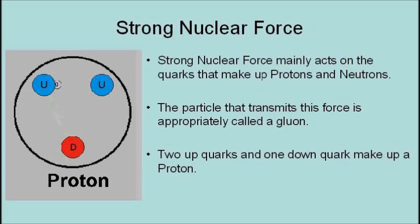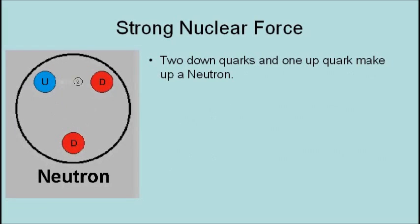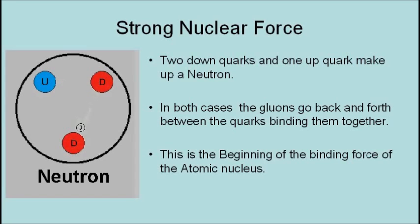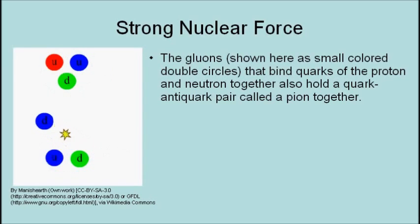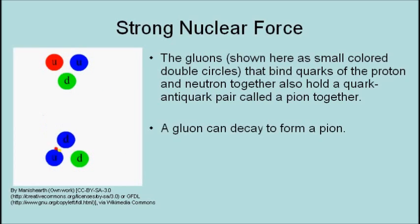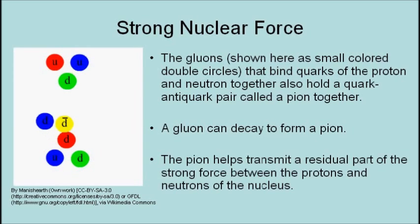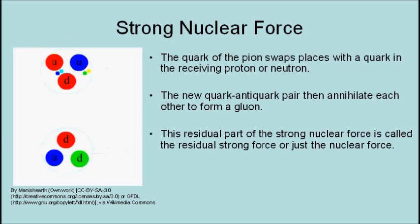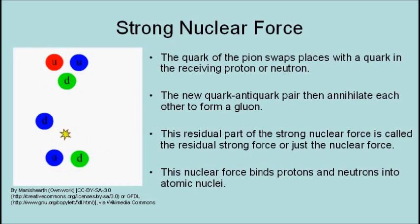Two up quarks and one down quark make up a proton. Two down quarks and one up quark make up a neutron. In both cases, the gluons go back and forth between the quarks, binding them together. This is the beginning of the binding force of the atomic nucleus. The gluons that bind the quarks of the proton and neutron together also hold a quark-anti-quark pair called a pion together. A gluon can decay to form a pion. The pion helps transmit a residual part of the strong force between the protons and neutrons of the atomic nucleus. The quark of the pion swaps places with a quark in the receiving proton or neutron. This residual part of the strong nuclear force is called the residual strong force, or just the nuclear force. This nuclear force binds protons and neutrons into atomic nuclei.